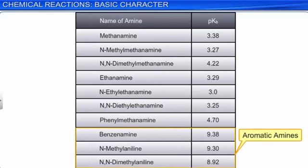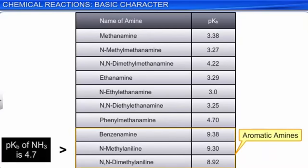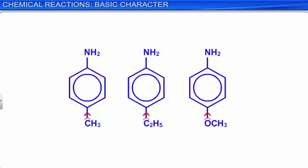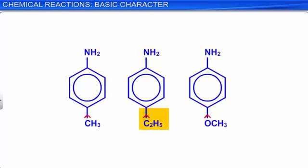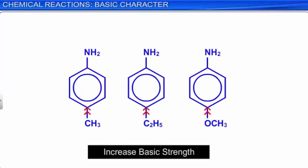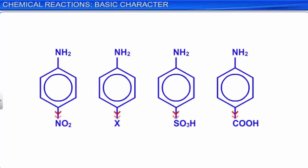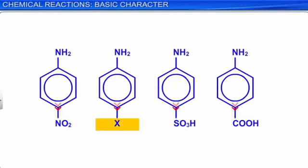In case of substituted aryl amines, electron-donating groups such as methyl, ethyl, and methoxy increase the basic strength, whereas electron-withdrawing groups like NO₂, halogens, SO₃H, and COOH decrease the basic strength.